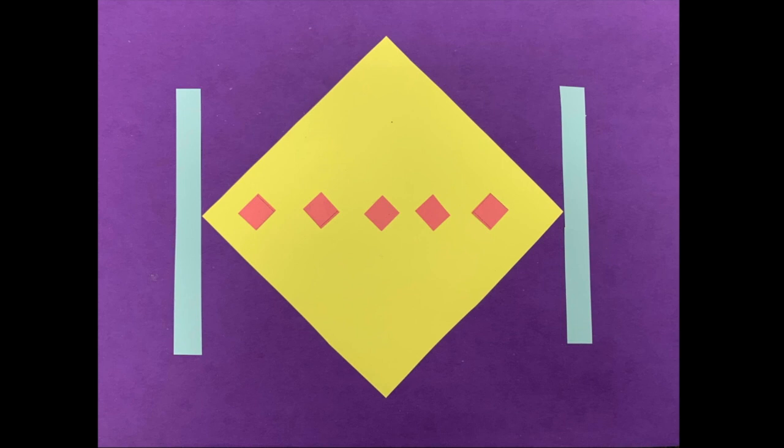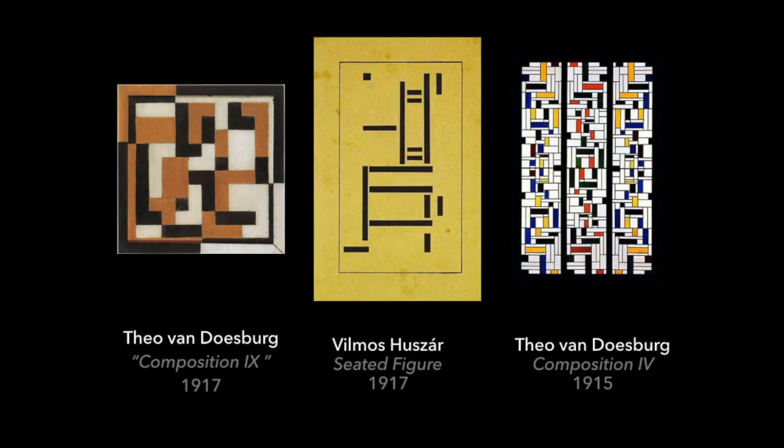I have an example for you. Notice how this image can be folded two ways — it has two directions of symmetry. It's also a number larger than 100. Do you know what it is? I'll give you a hint: the blue strips are tens.